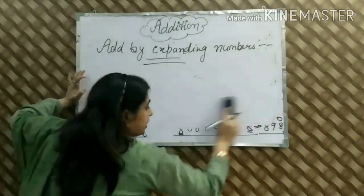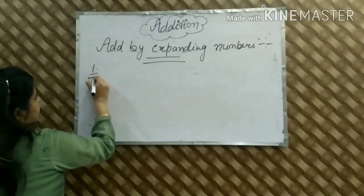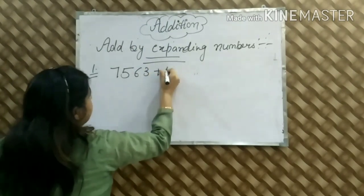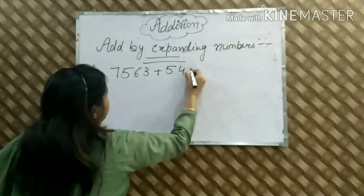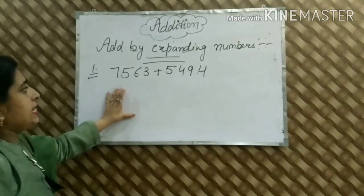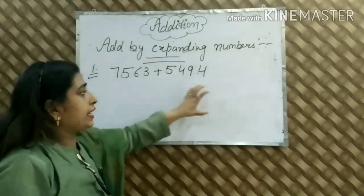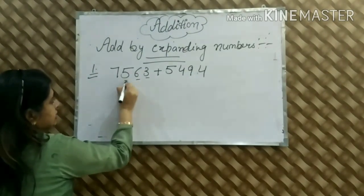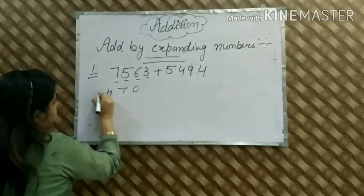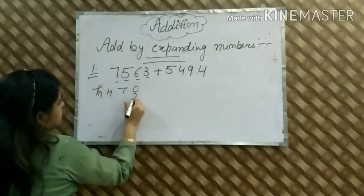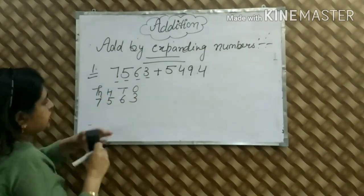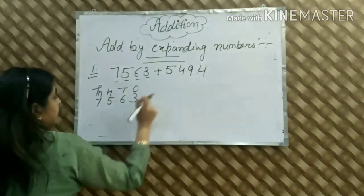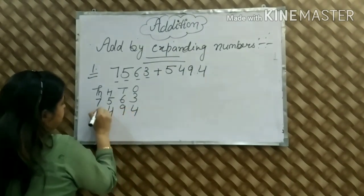Now we will find four-digit numbers. We have 7,563 plus 5,494. We have to write this in expanded form and find the sum. We have ones, tens, hundreds, and thousands. Ones place: 3, tens place: 6, hundreds place: 5, thousands place: 7. For the second number: ones place: 4, tens place: 9, hundreds place: 4, thousands place: 5.